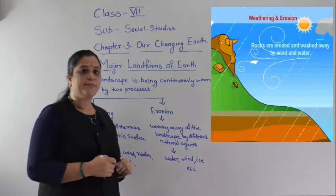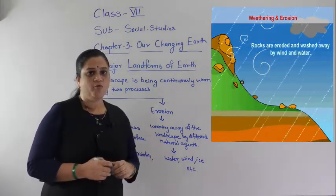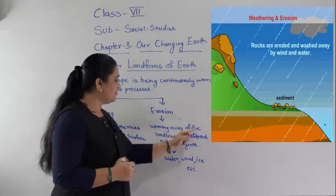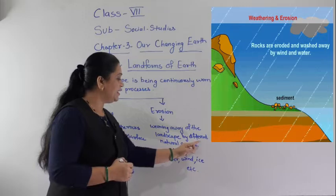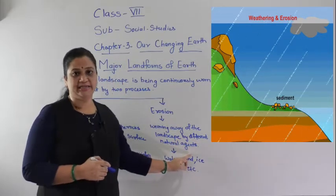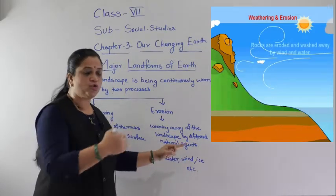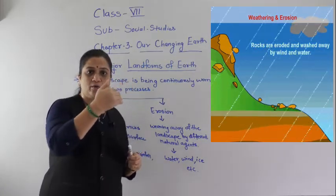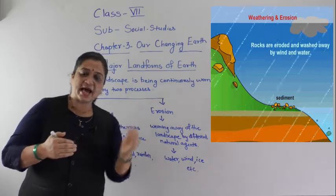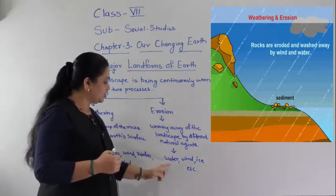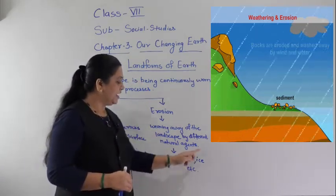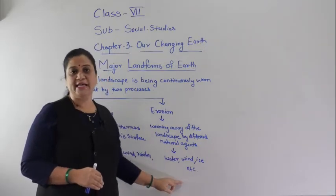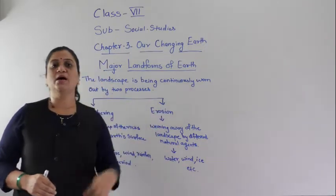The second process is erosion. What is erosion? Erosion is the wearing away of the landscape by different natural agents. When these rocks break down into small sediments, they are eroded by the action of water, wind, ice, etc. These are the natural agents which erode the material.